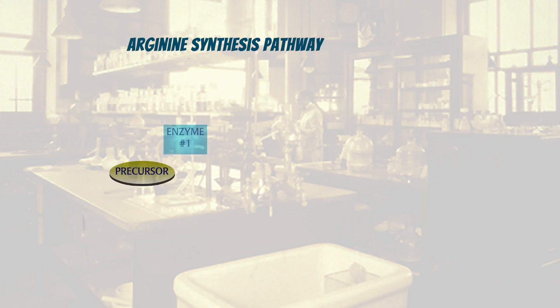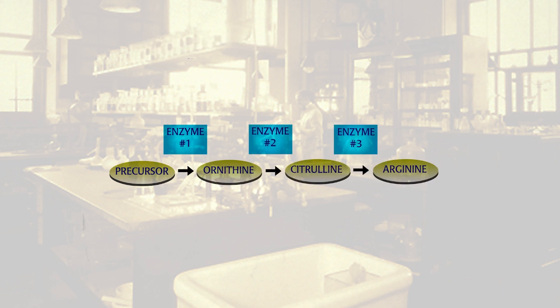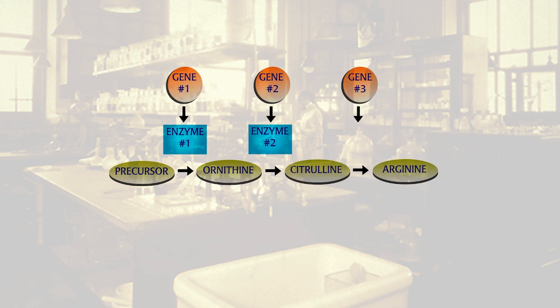The amino acid arginine is synthesized in a stepwise process catalyzed by enzymes. A precursor molecule is converted into ornithine, then citrulline, and finally arginine. If one gene makes an enzyme, there should be a genetic mutation for each step of the synthesis pathway. Among the arginine mutants, there should be strains that need either ornithine or citrulline or arginine as supplements.